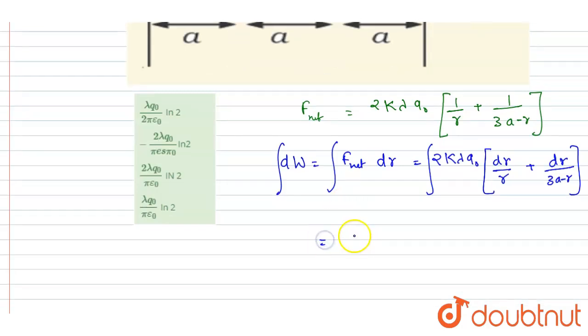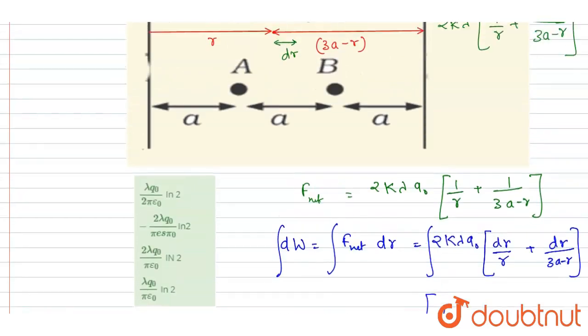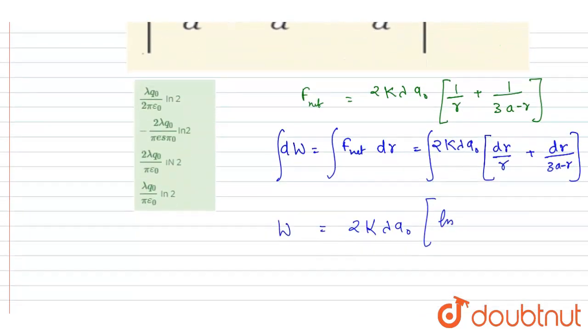So if I take the constant outside, the work done will be equals to 2k lambda Q naught times the integral. Its integration will be, so the limit here will be, if you see, the R is varying from A to 2A.